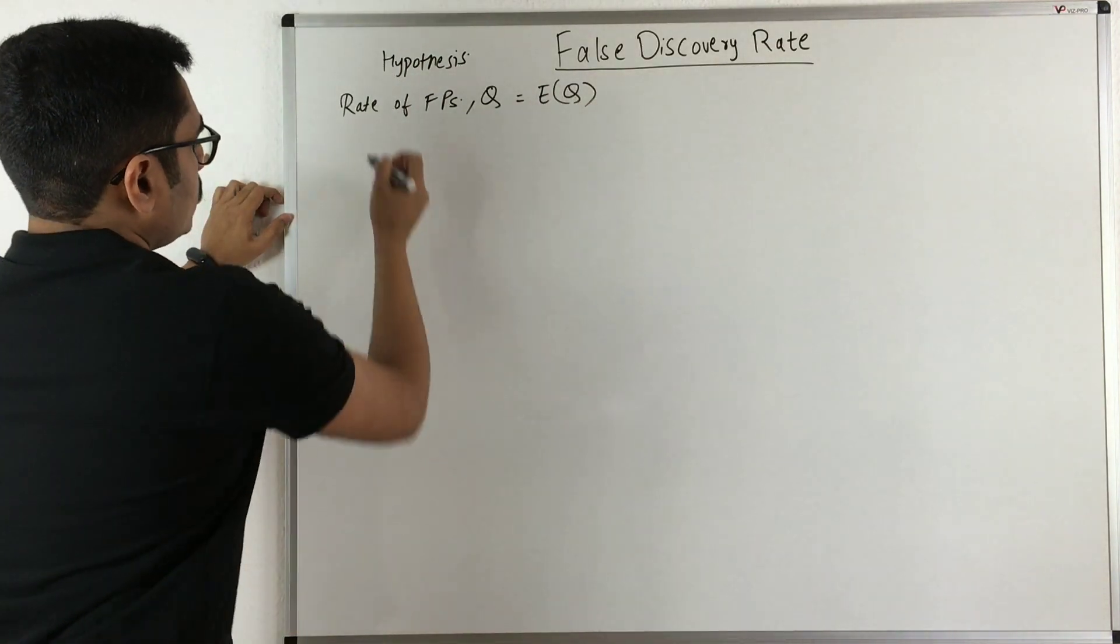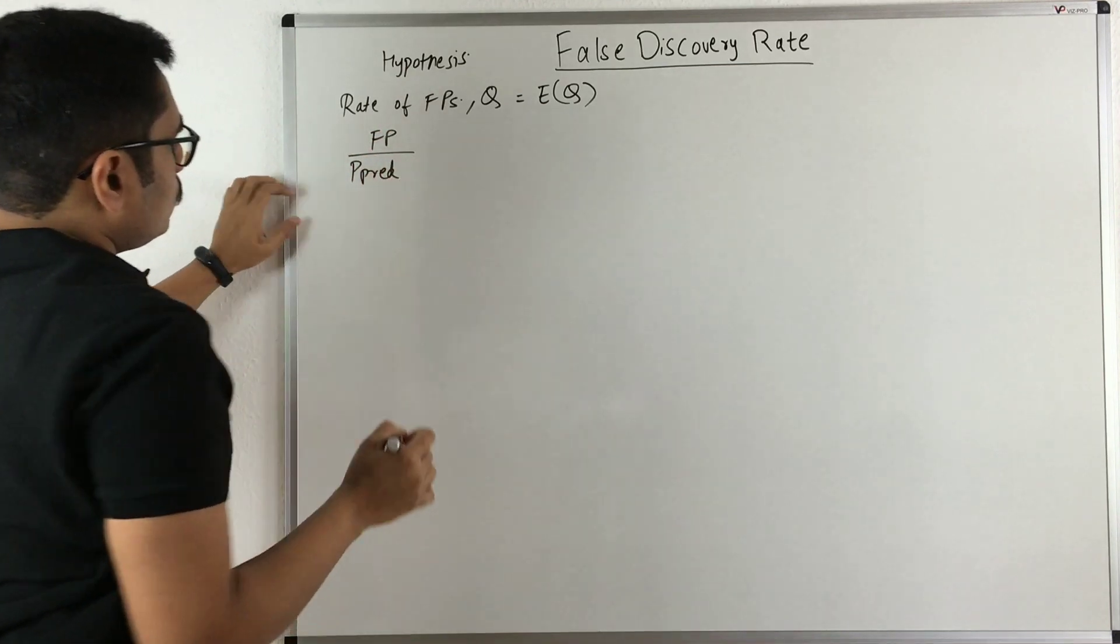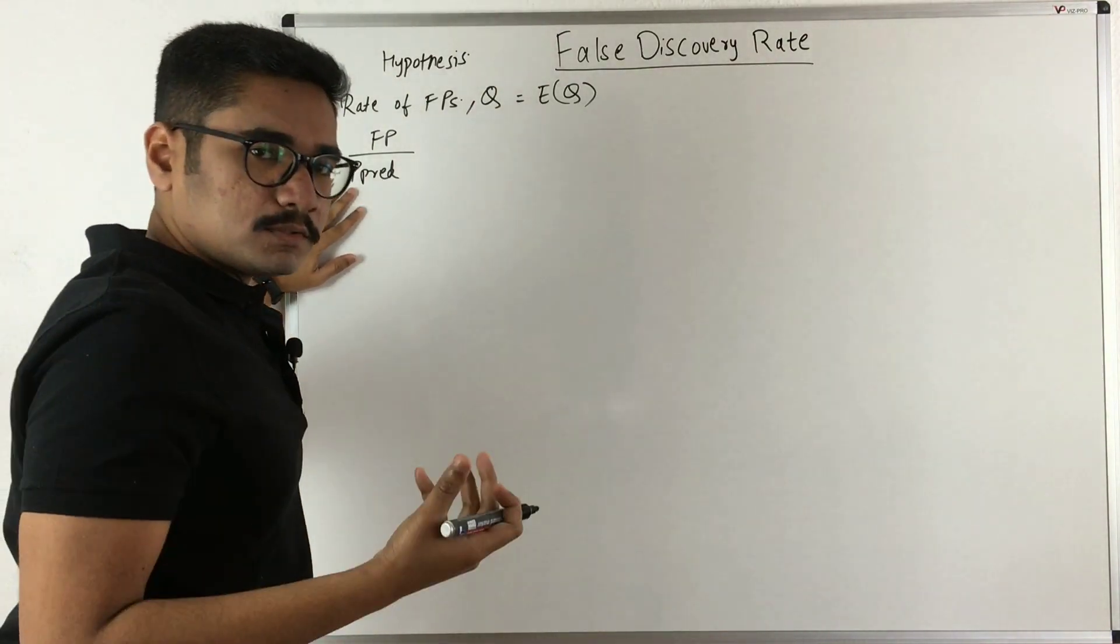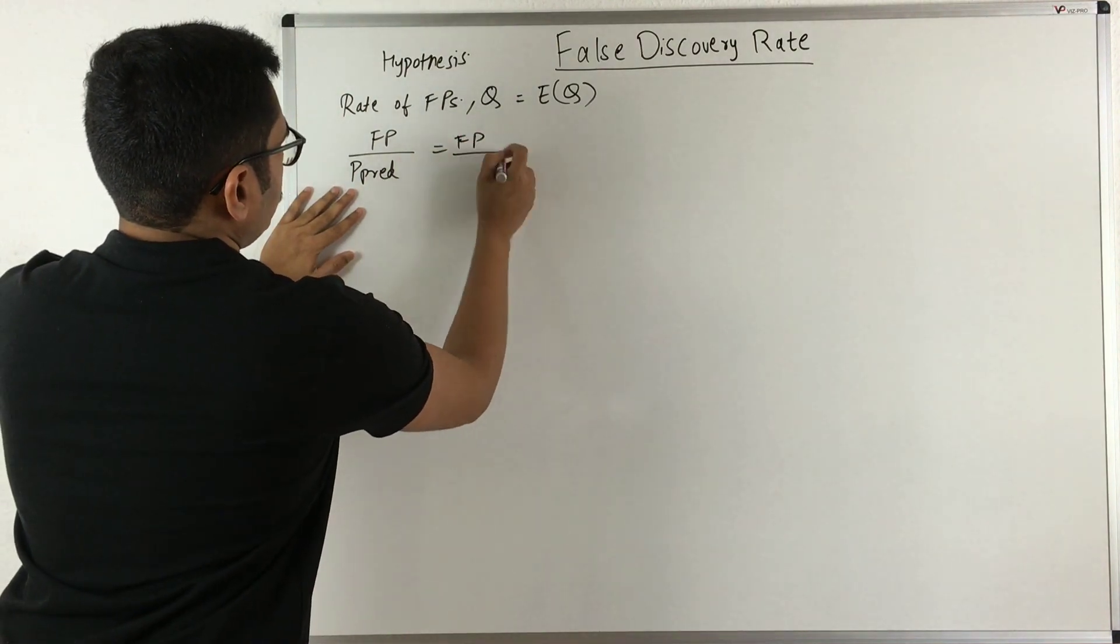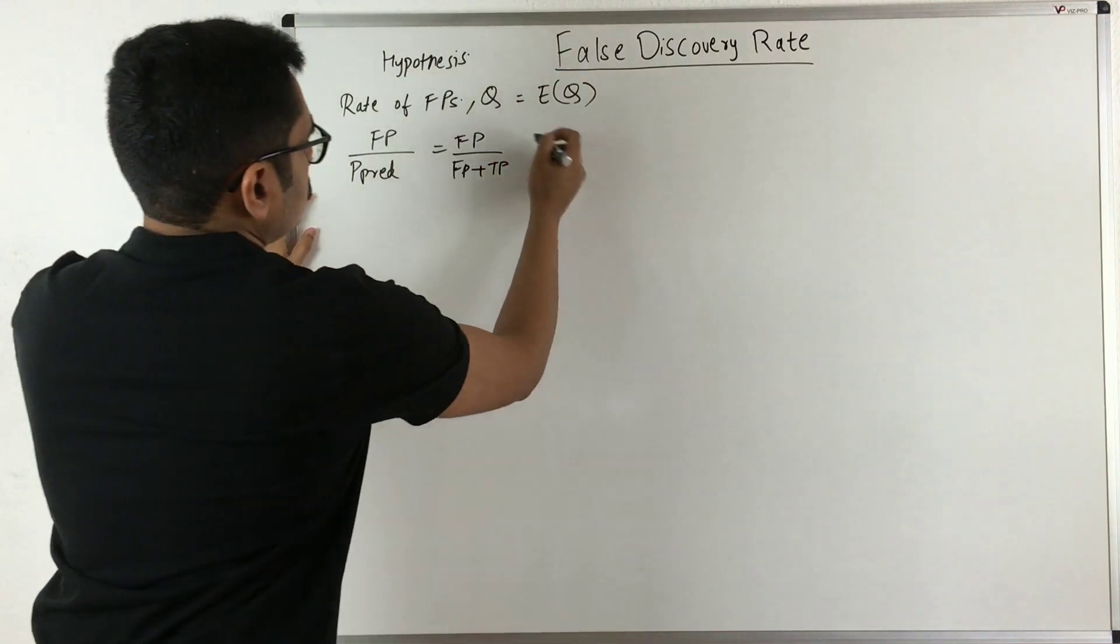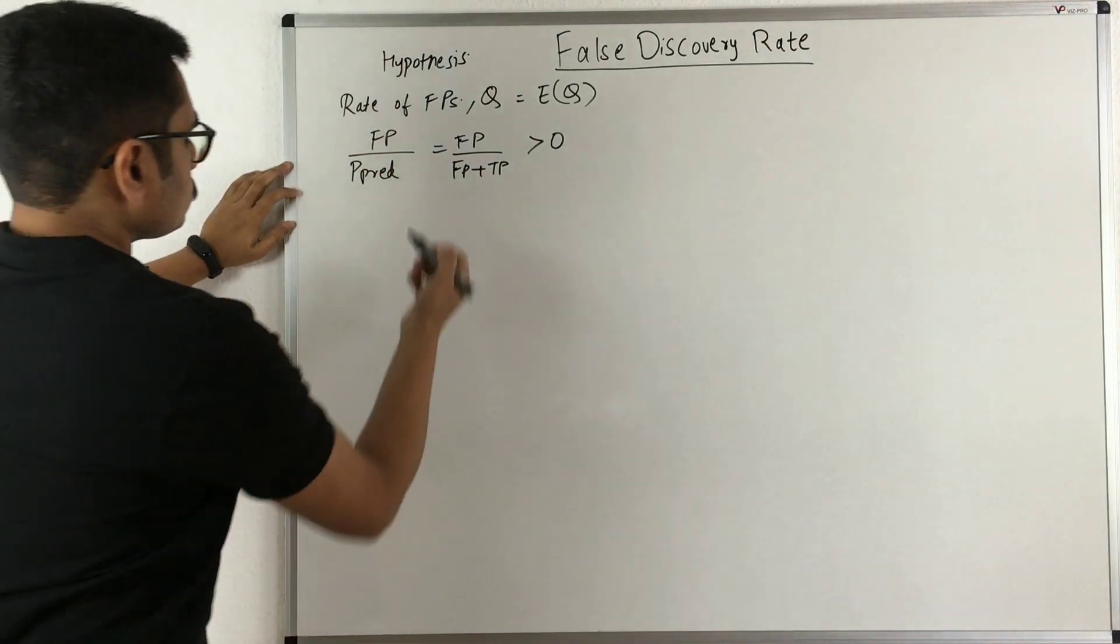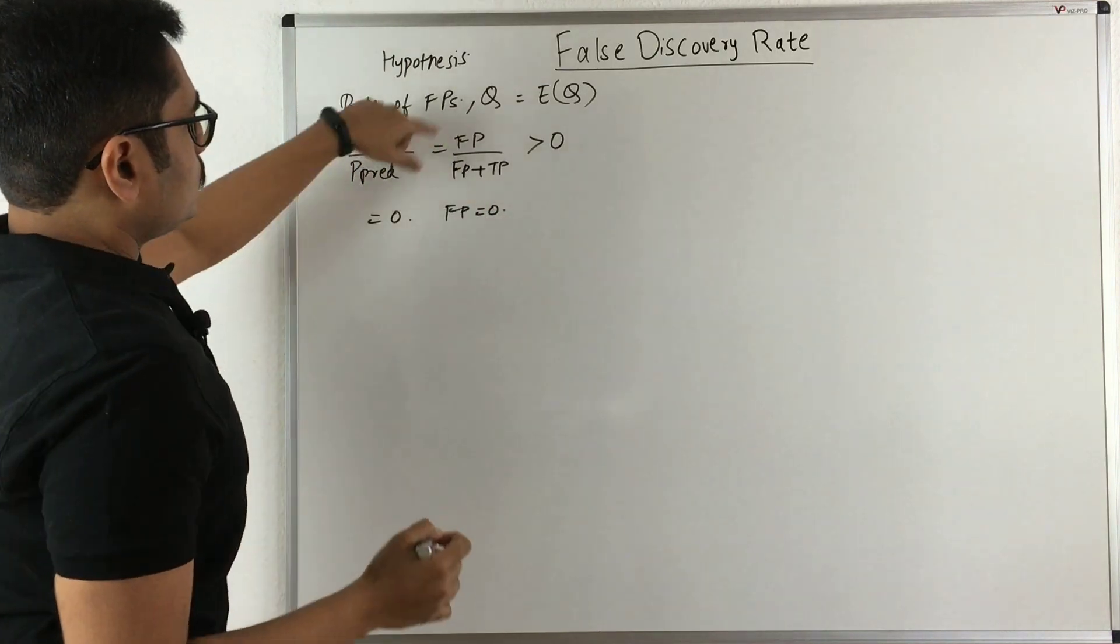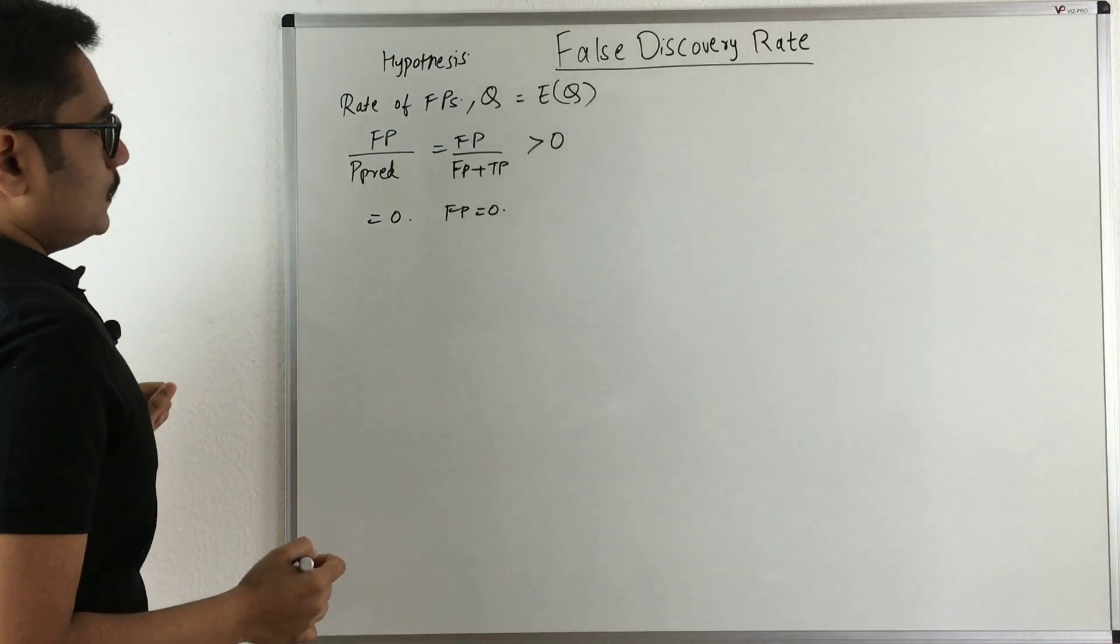It is given as false positives upon positive predictions. The positive predictions is the total number of positives from the predicted class, so it is FP upon FP plus TP. This Q value is greater than 0 when you have false positives, and it is 0 if your false positives is 0. The term comes out to be 0 if the numerator is 0, meaning false positives is 0.